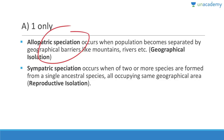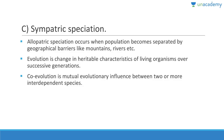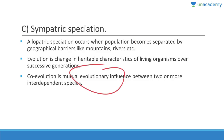Allopatric speciation occurs when a population becomes separated by geographical barriers like mountains or rivers. Sympatric speciation occurs when two or more species form from a single ancestral species occupying the same geographical area, but they are not reproductively compatible. Question 113: Formation of two or more species from a single ancestral species in the same geographical area is sympatric speciation. Evolution is change in heritable characteristics over generations; co-evolution is mutual evolutionary influence between two or more interdependent species.